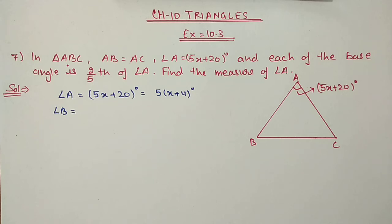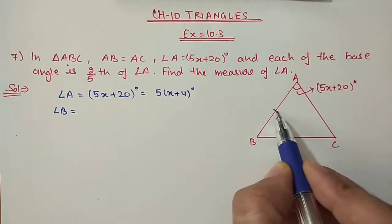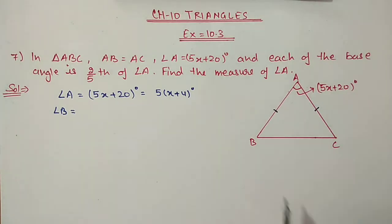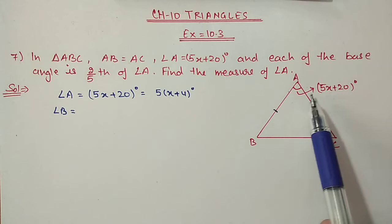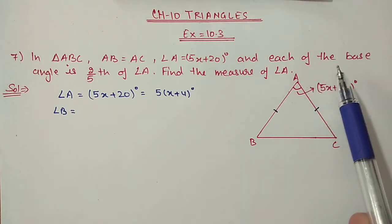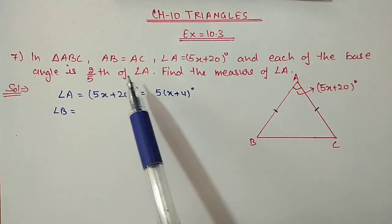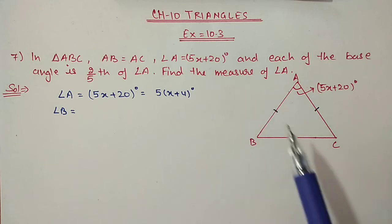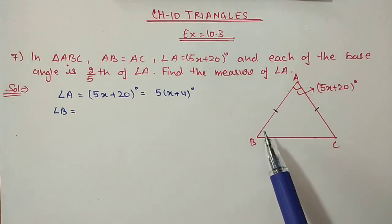Hello students, we are doing chapter number 10, triangles, exercise 10.3. Till question number 6 we have already done in the previous video. Now we are starting from question number 7. In triangle ABC, AB is equal to AC, so these two sides are equal. Angle A is given as 5x plus 20, and each of the base angles is 2/5 of angle A. Find the measure of angle A.